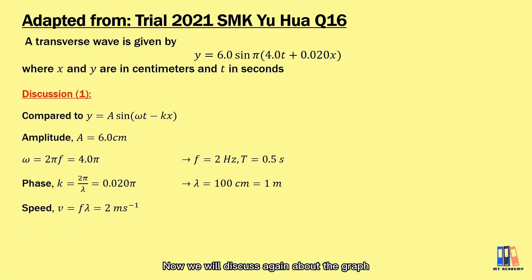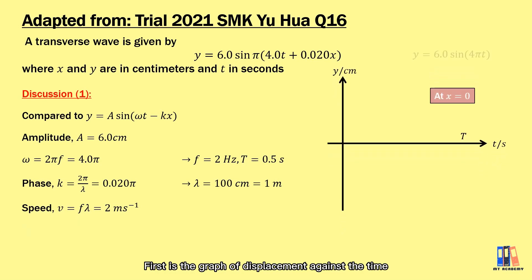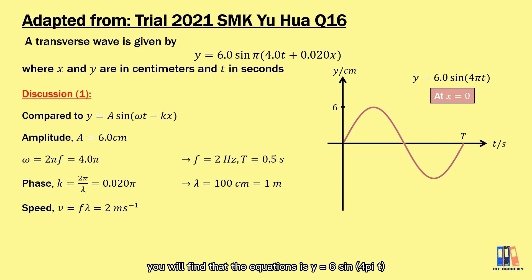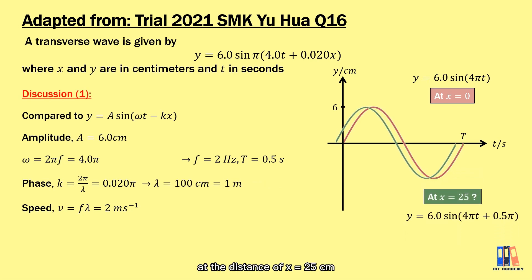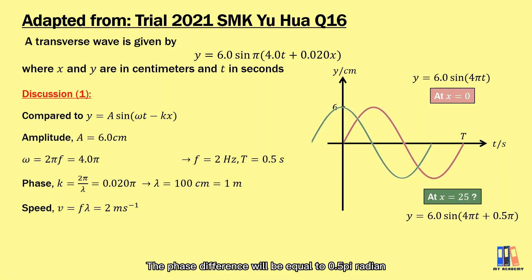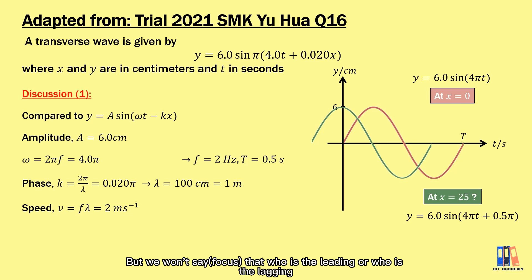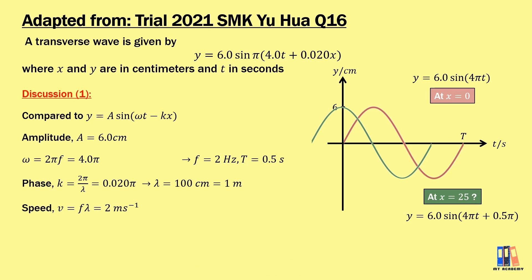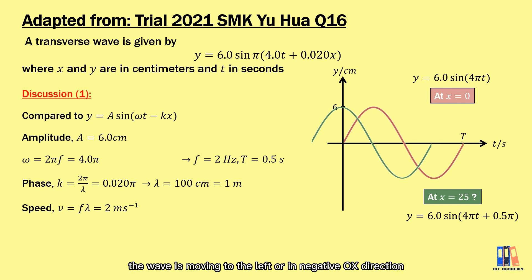Now we discuss the graphs. For the displacement-time graph, at the reference point x = 0, substituting gives y = 6 sin(4πt), which is a sine wave. At x = 25 cm, the phase difference is 0.5π radians or 90 degrees, leading the reference point. Since the phase difference in the equation is +0.02πx (positive), the wave is moving to the left, in the negative x direction.